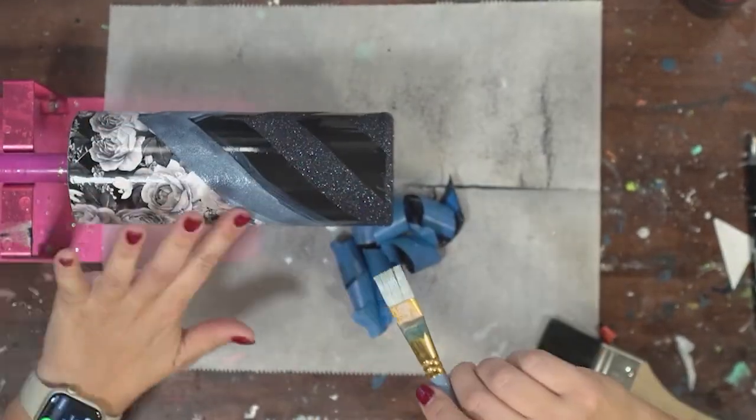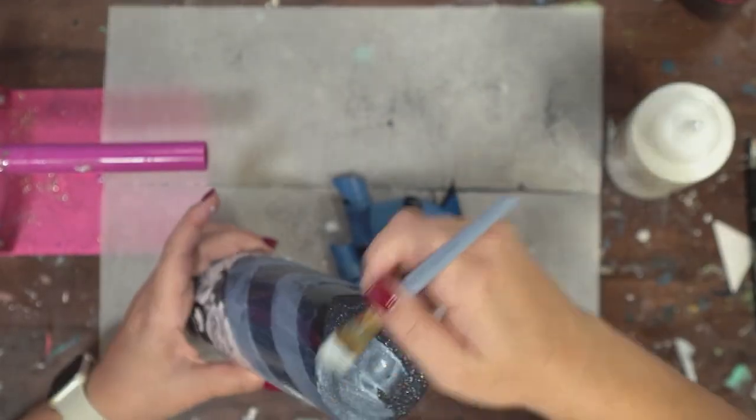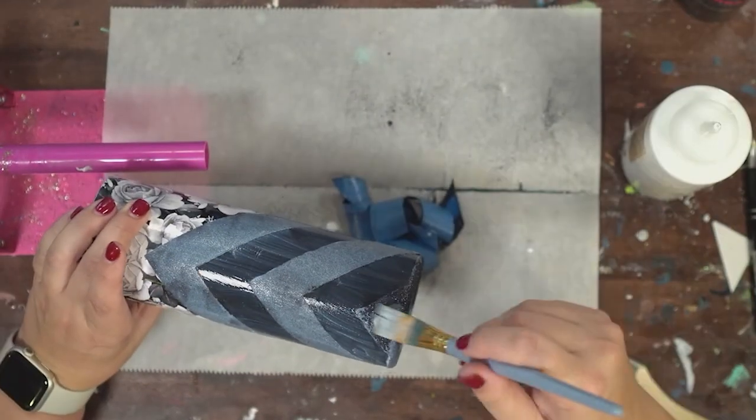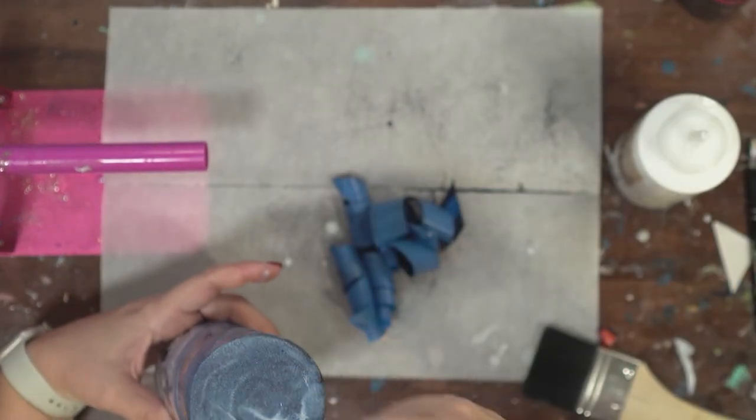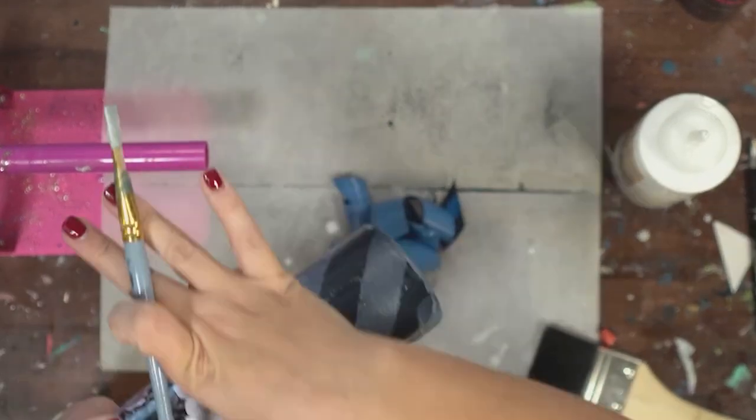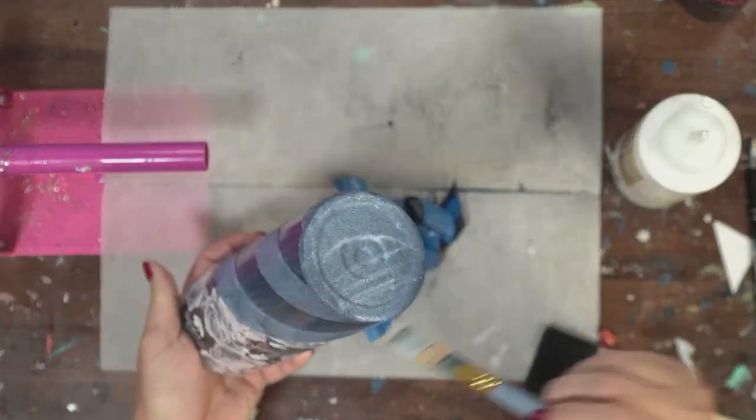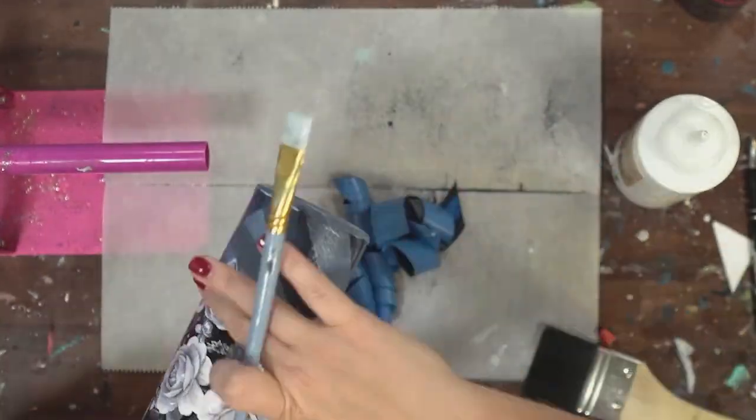But then I just put glitter glue on the whole rest of the tumbler even where there wasn't any glitter. It's totally fine—it will dry clear and you won't be able to tell that it's there. Plus I'm going to cover it with glitter. But just be careful around that vinyl edge and then cover it all with glitter glue.